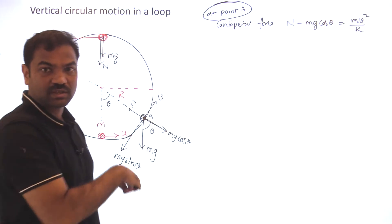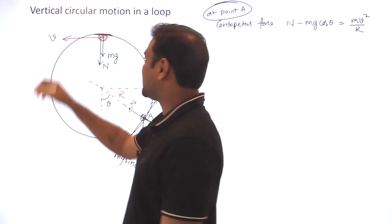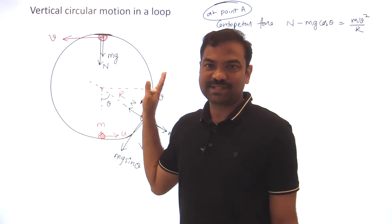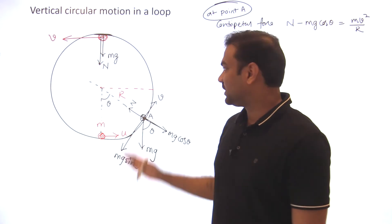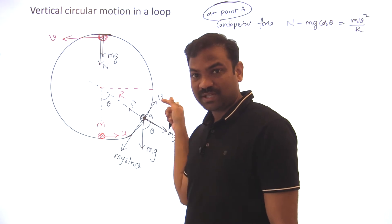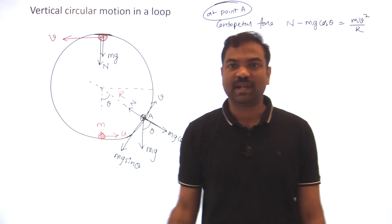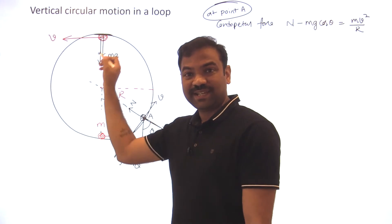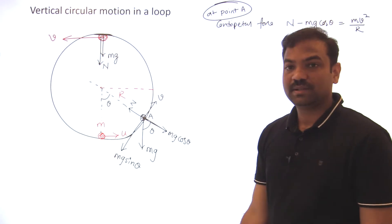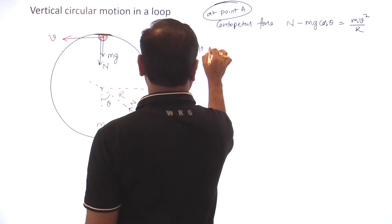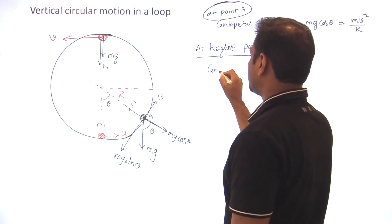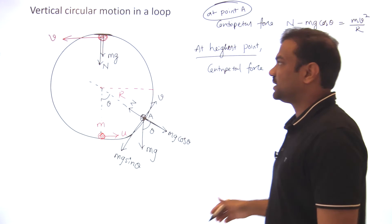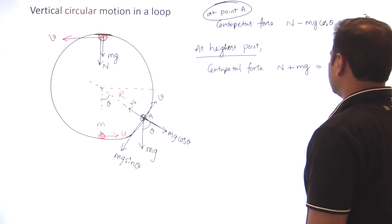At the highest point, how will the forces act? mg acts towards the center. The normal reaction acts away from the surface. On the ball, away from the surface — because the ball is on the inner surface, away from the surface is towards the center. Normal reaction always acts towards the center, perpendicular to the contact surface, which means along the radial direction. So at the highest point, the centripetal force equation is...